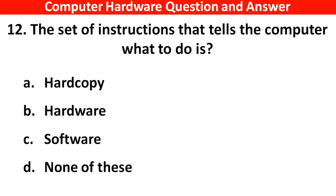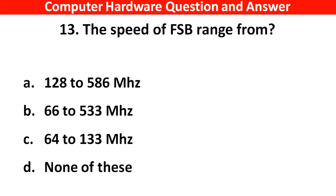The set of instructions that tell the computer what to do is — the right answer is Option C: Software. Next question: The speed of FSB ranges from —